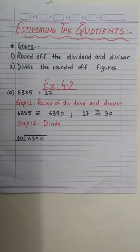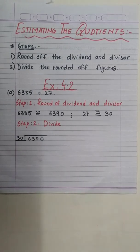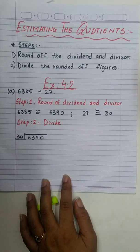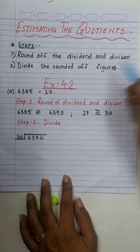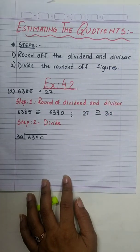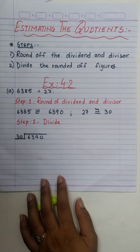Let us begin today's session. I hope you all remember the estimation method that we used in the previous operations to get a round-off number and make the calculations easier. For estimating the quotients, we have to follow two simple steps. First, round off the dividend and divisor. Second, divide the rounded-off figures. This makes the calculations very quick and easy. Let's try.